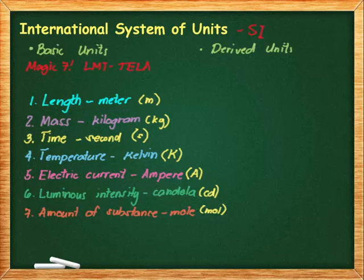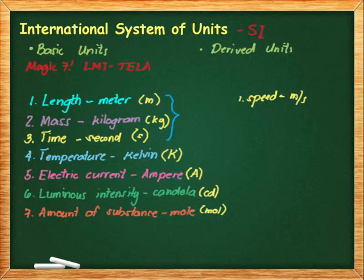The ones you will be mostly dealing with in the first part of studying physics are the first three — length, mass, and time — but you will meet the other four in the future. Now, if these are the basic units, what are the derived units? All others are derived units. We already had an example: speed. The unit of speed is meters per second — m is for length and s is for time — so meters per second is a derived unit.